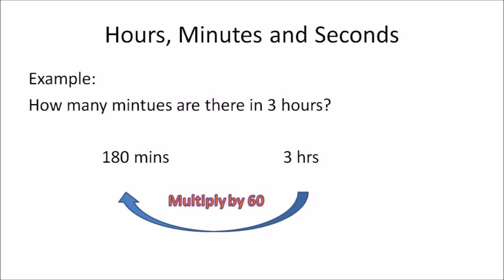In this example: how many minutes are there in three hours? You need to convert hours into minutes. The amount you have in hours — 3 — multiplied by 60 gives you 180 minutes. So hours to minutes, you need to multiply by 60.